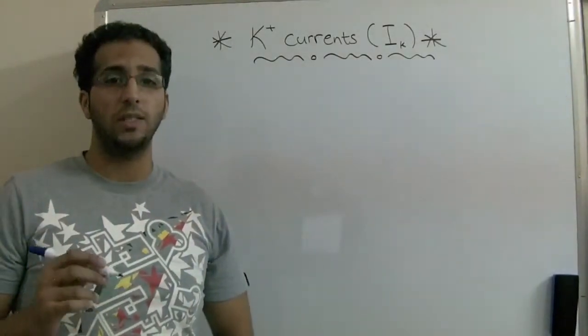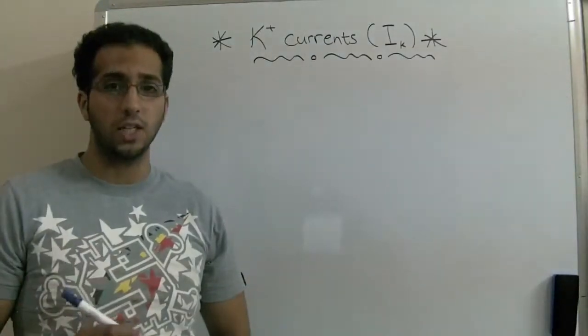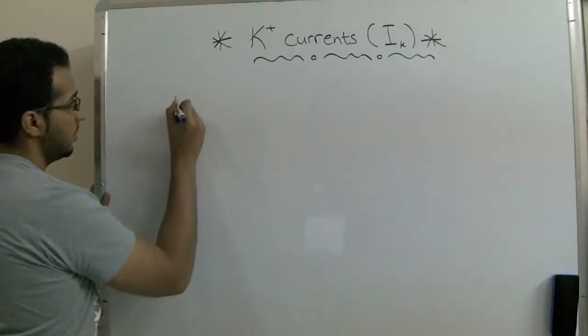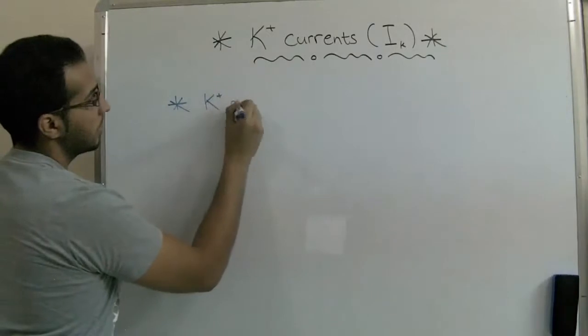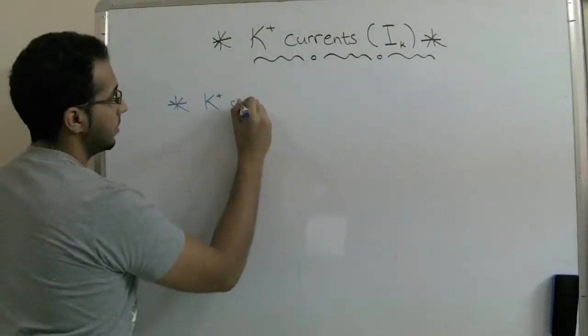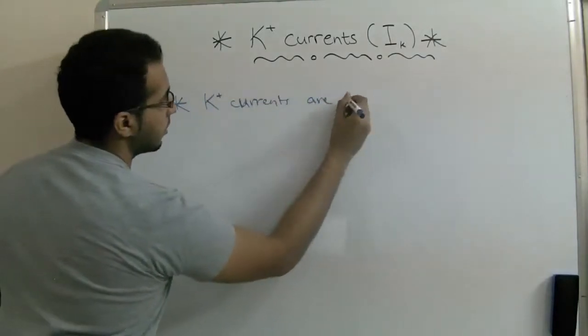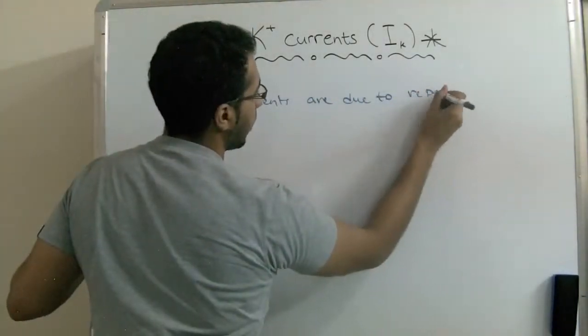Potassium currents are due to repolarization currents resulting from the slow opening with depolarization of potassium channels.